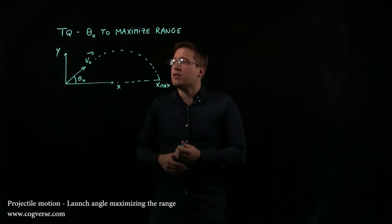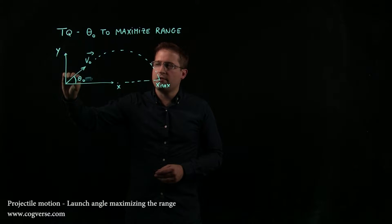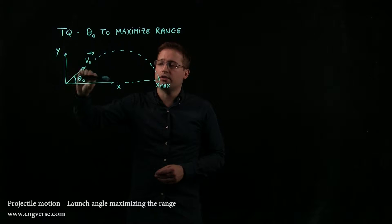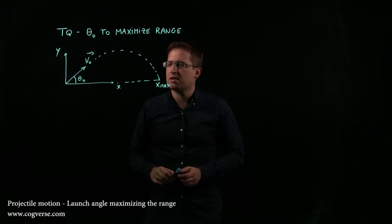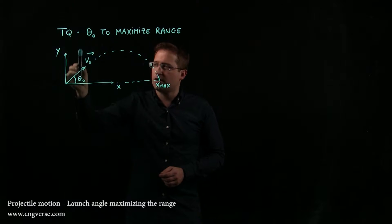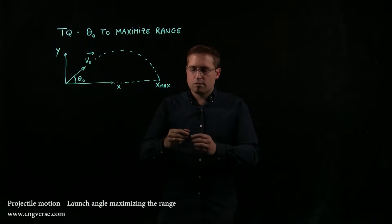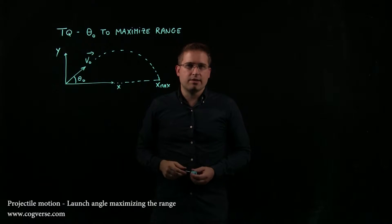First of all, it seems to make sense. If you look at the extremes, if θ₀ is very, very small, you're not going to go far at all. You're just going to be shooting into the dirt, basically. And if θ₀ is really, really big, at some point you're almost going to be vertical, and you're not going to go very far before you land. So it seems to make sense that there ought to be an angle that maximizes the range.